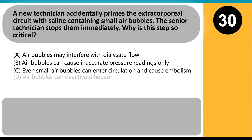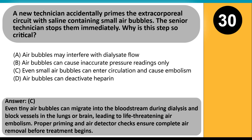A new technician accidentally primes the extracorporeal circuit with saline containing small air bubbles. The senior technician stops them immediately. Why is this step so critical? A. Air bubbles may interfere with dialysate flow. B. Air bubbles can cause inaccurate pressure readings only. C. Even small air bubbles can enter circulation and cause embolism. D. Air bubbles can deactivate heparin. Answer C. Even tiny air bubbles can migrate into the bloodstream during dialysis and block vessels in the lungs or brain, leading to life-threatening air embolism. Proper priming and air detector checks ensure complete air removal before treatment begins.